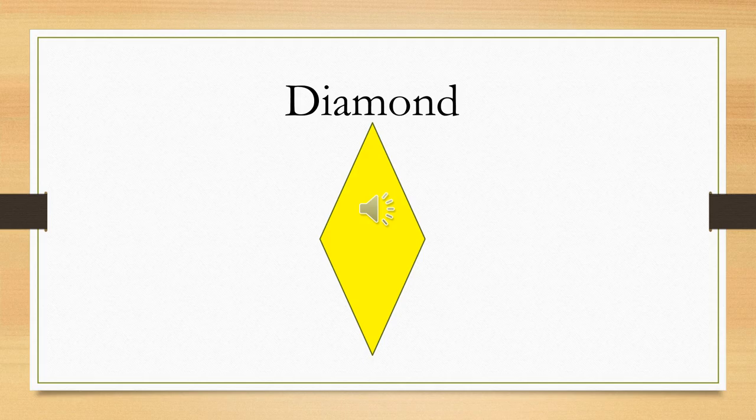If you see the diamond, it is basically like a square where you stretch it here and stretch it there. Can you see? It looks like a square with a stretch here and a stretch there — and that is called a diamond.